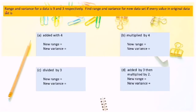Now let us try this question. Range and variance of a data set are 9 and 3 respectively. Find the range and variance for the new data set if every value in the original data set is added with 4. As we learned just now, when added with a number, the range and variance remain the same. So new range is 9 and new variance is 3.